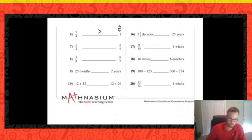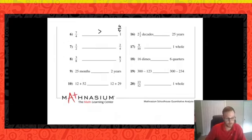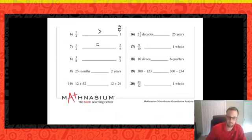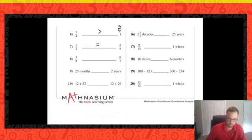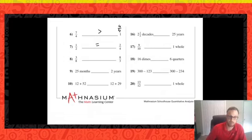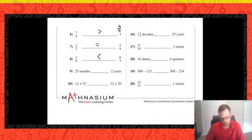Problem seven: one half and two quarters — are they equivalent fractions? One out of two versus two out of four — yes, those are equal. Number eight: three eighths compared to eight thirds. Three eighths is a proper fraction — part of a whole — while eight thirds is an improper fraction meaning more than a whole. More than a whole is certainly greater than a part of a whole, so three eighths is less than eight thirds.